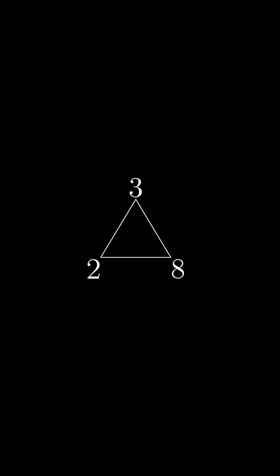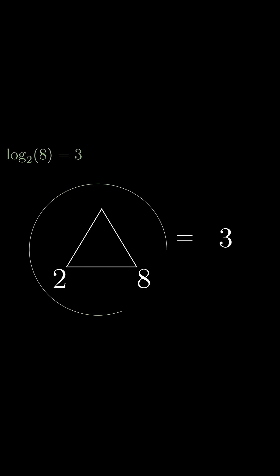To express the operation 2 cubed, you remove that bottom right corner, and the symbol as a whole represents the value that should go in that missing corner. To express log base 2 of 8, which is asking the question 2 to the what equals 8, what you do is remove the top number. Again, the symbol as a whole represents the value that should go in that missing corner.